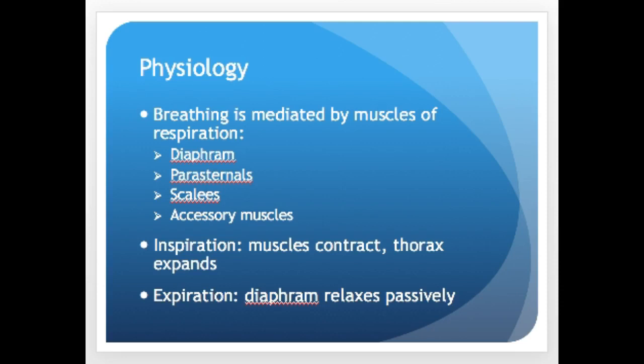A little about the physiology of breathing, which is an autonomic act controlled by the brainstem and mediated by the muscles of respiration. The primary muscle is the dome-shaped diaphragm. When it contracts during inspiration, it descends in the chest and enlarges the thoracic cavity. Many students mix this up — when the diaphragm contracts, it actually goes down, creating more room in the chest, which is how passive air becomes inhaled.